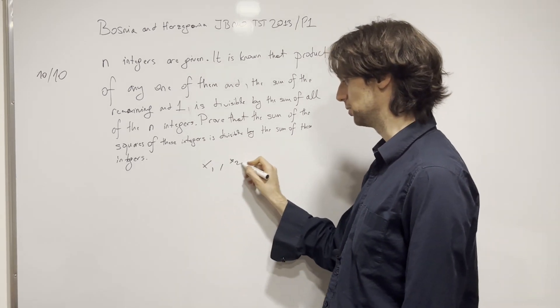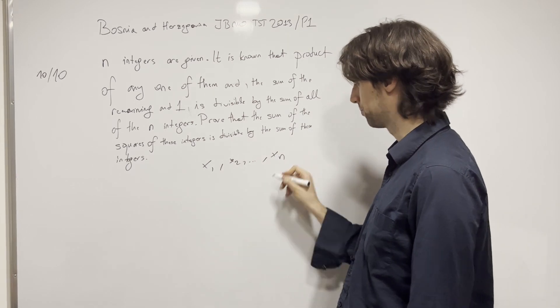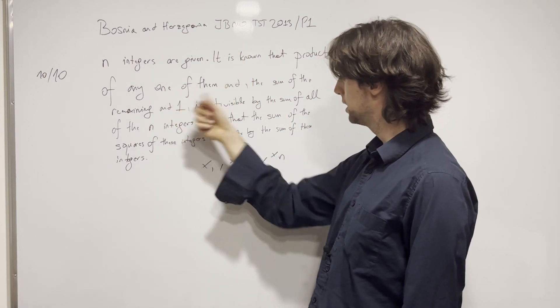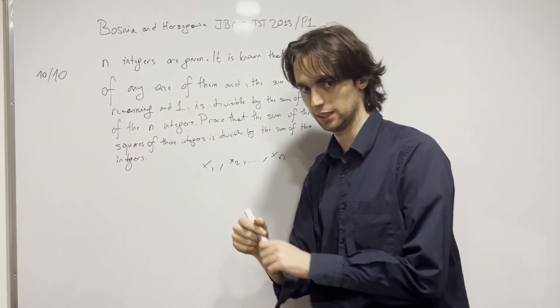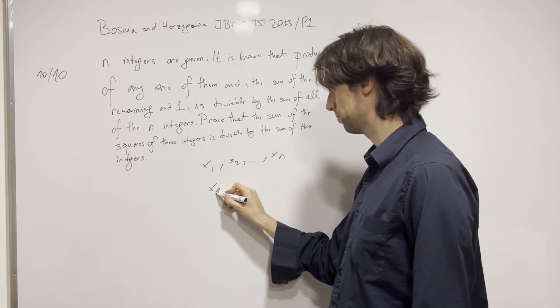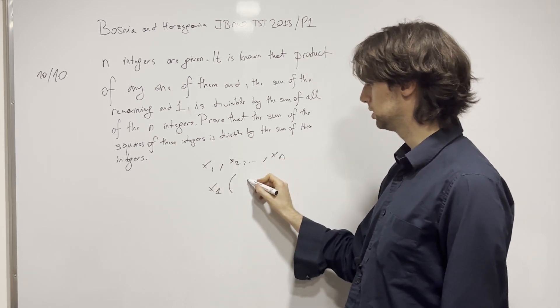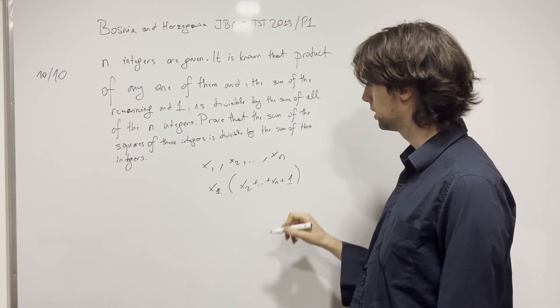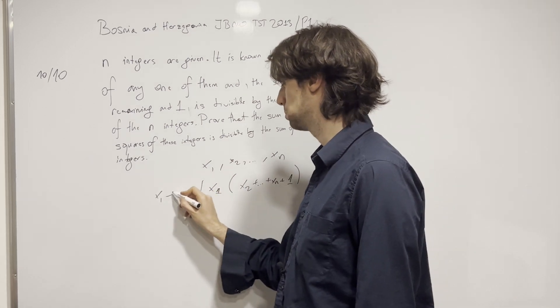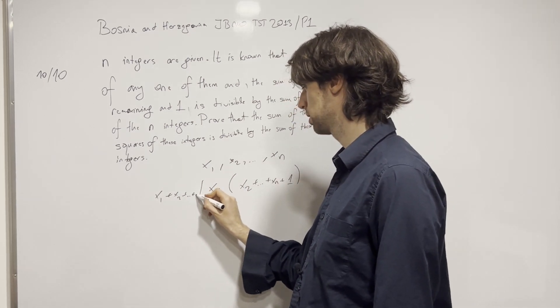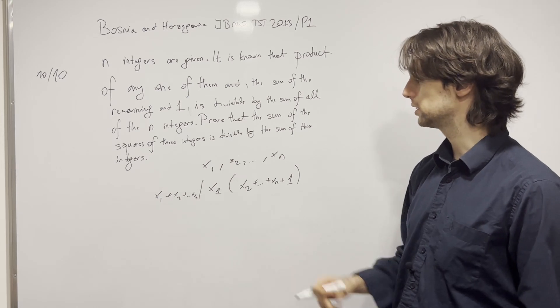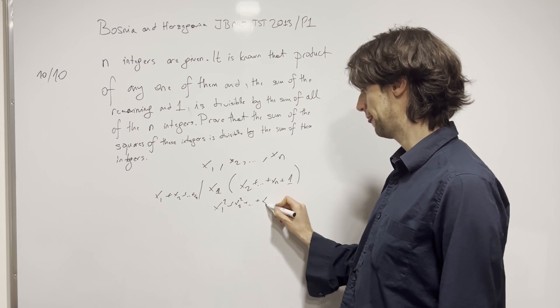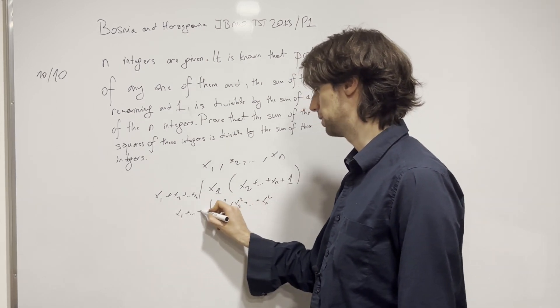Now it is known that the product of one of them and the sum of the remaining n-1, so you have the product of say x1 with the sum of the remaining xn plus 1 is divisible by the sum of them all. It's divisible by x1 plus x2 plus xn. Prove that the sum of the squares of these integers, so x1 squared plus x2 squared plus xn squared is divisible by the sum of them all.